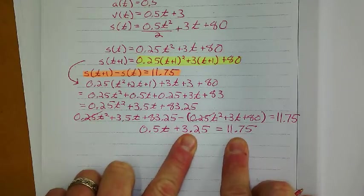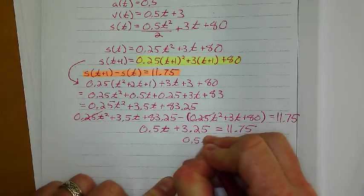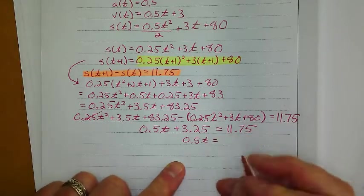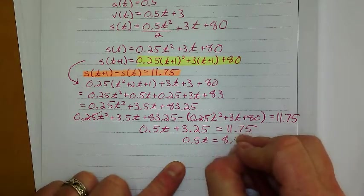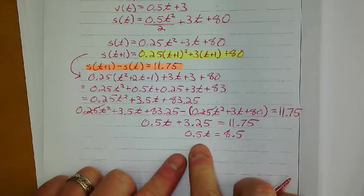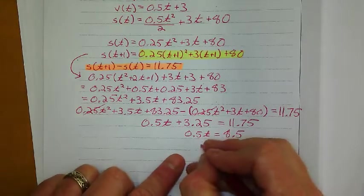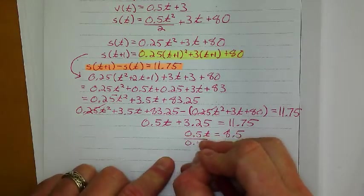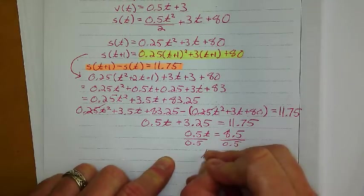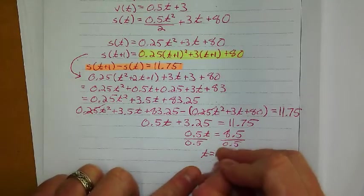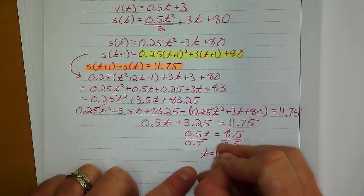And 83.25 minus 80 gives me plus 3.25 equals 11.75. And here, it's a straight linear equation. I subtract 3.25 from both sides, and I get 0.5t equals 8.5. Divide both sides by 0.5, and I get an answer of 17 hours.